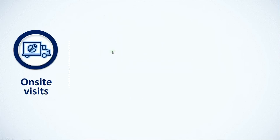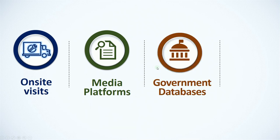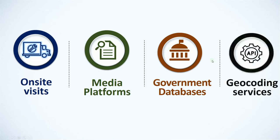We know that this information we can derive is very valuable, but how do we source it? Number one is on-site visits — maybe you want information from a certain area, like the number of ATMs springing up. You can take your car or hire people with handheld devices like cell phones and GPS to collect the data. Media platforms are also useful, as are government databases. Governments have been collecting this data for planning for many years. You can also access geocoding services — there are a number of geocoding companies that provide this kind of service.